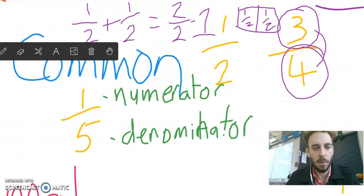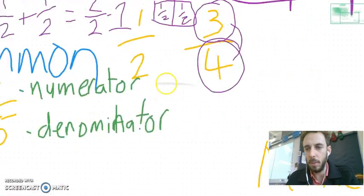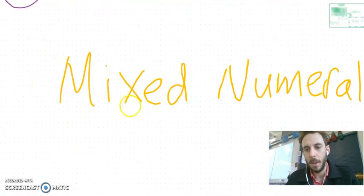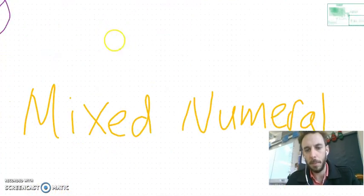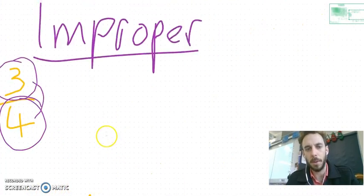Then we'll scroll across and have a look at a different type. This one is called a mixed numeral. We've also got improper. Let's do a mixed numeral first. Actually, no, we're doing improper.